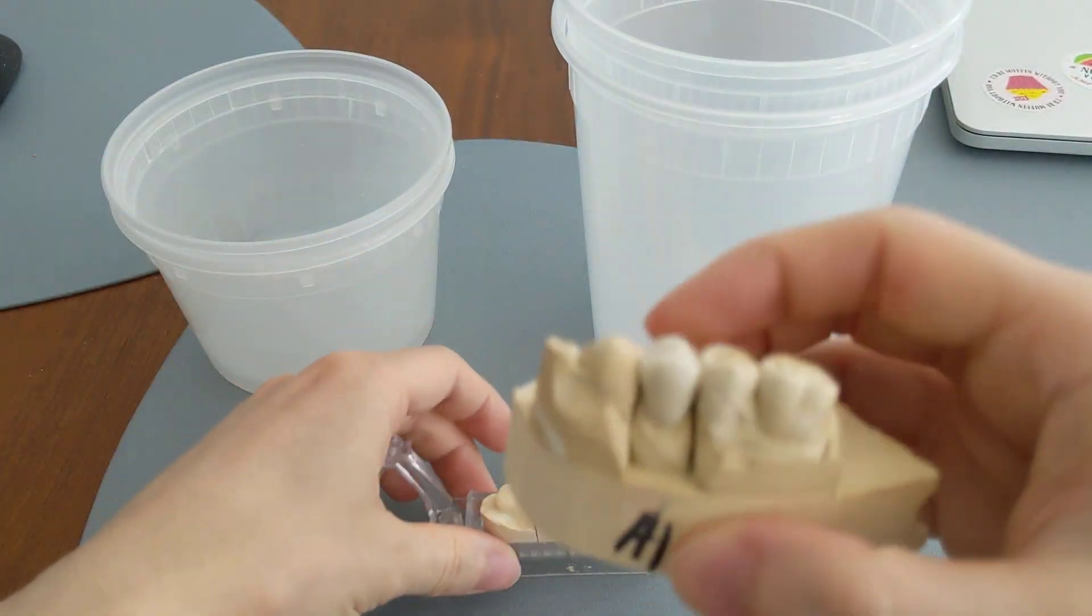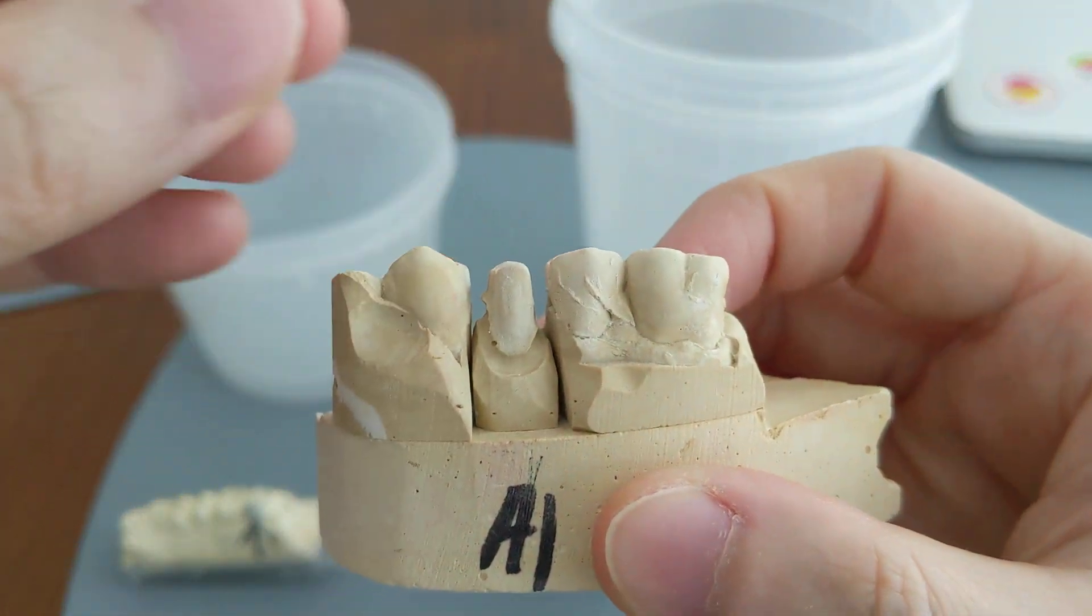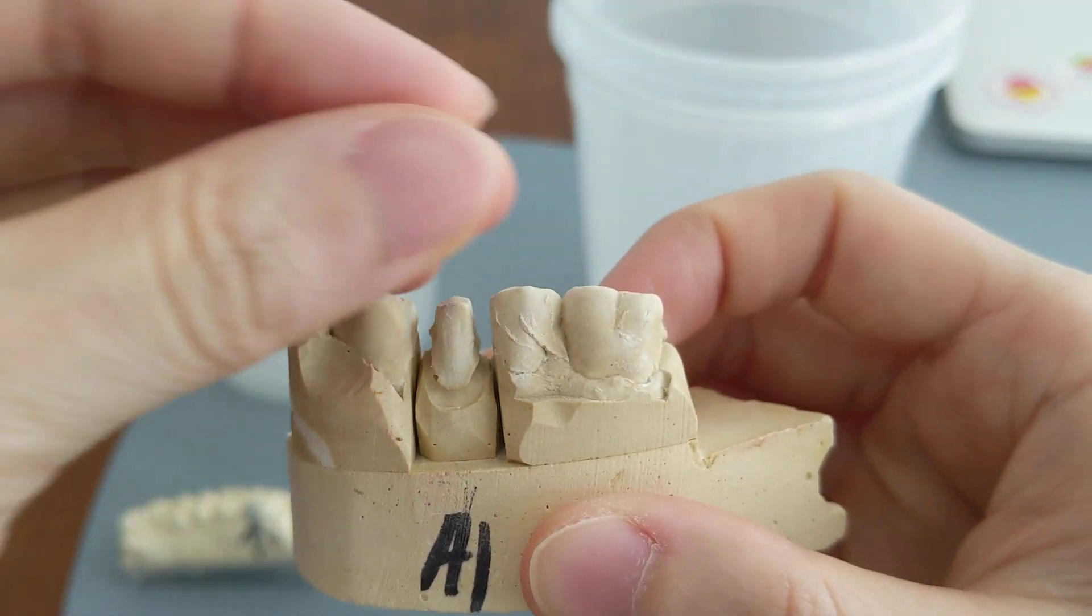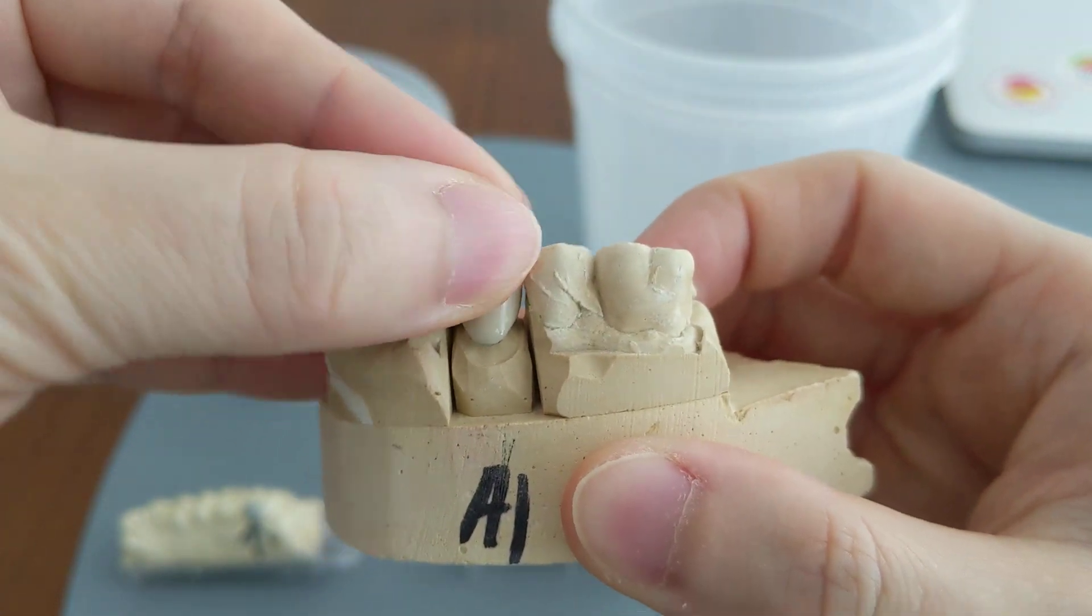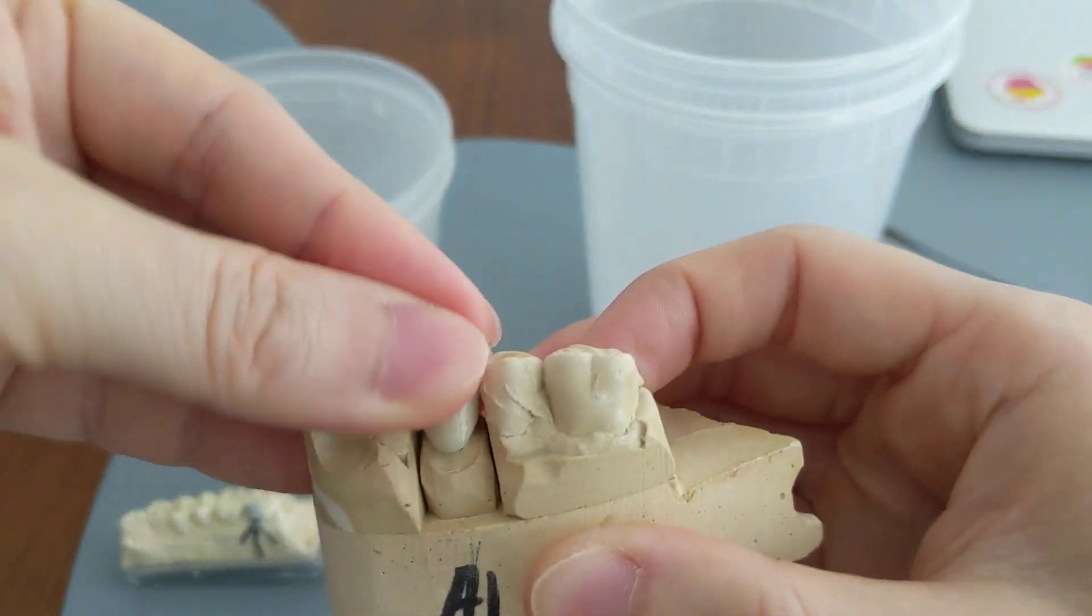And here we have a crown that is a lot taller. You see how it's taller on this one? Because it's taller, it's more difficult to dislodge it to the side.